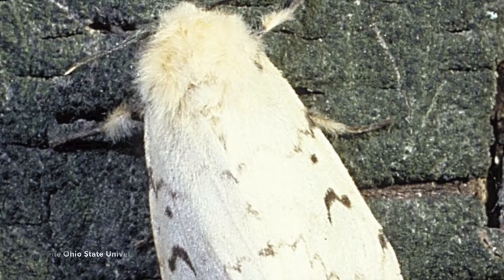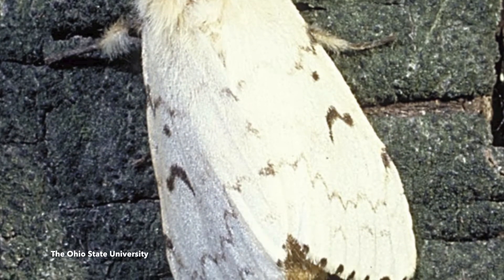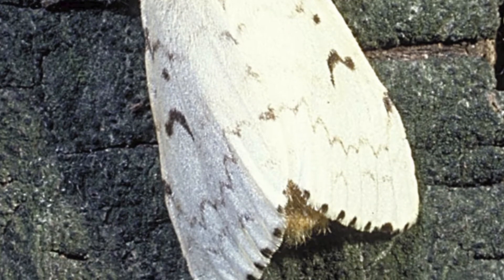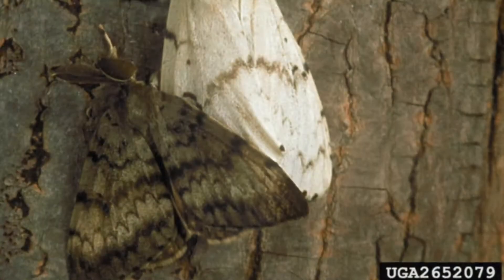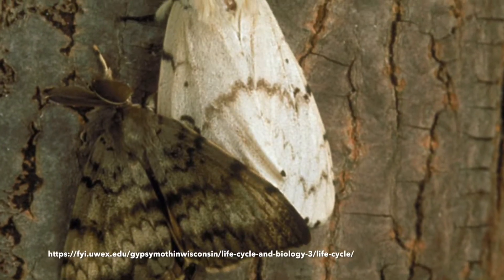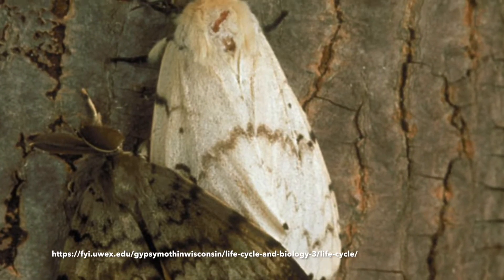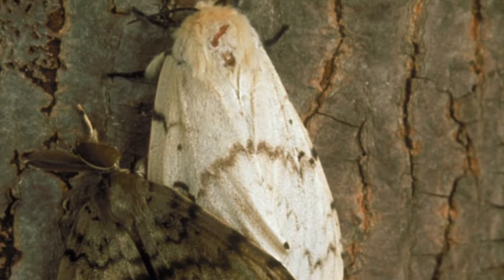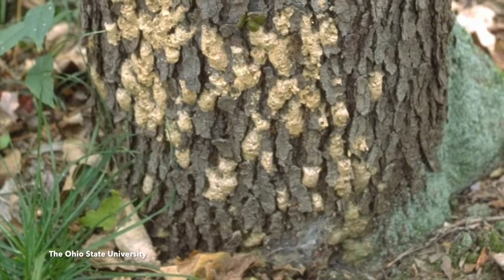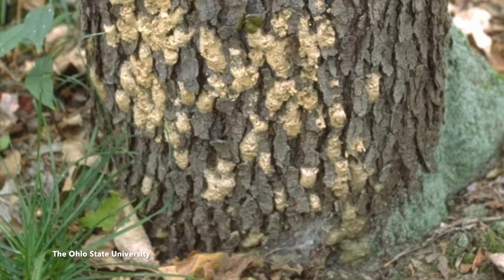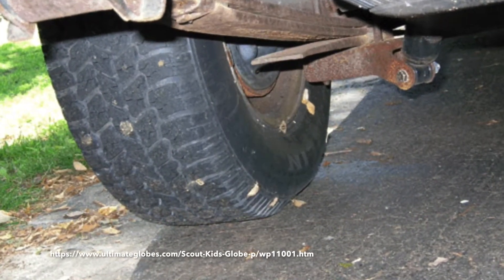The unflighted females are large white moths which climb up the trunks of trees and give off pheromones to attract males for mating. The males fly during the day, locate females, and after mating, eggs are laid on trunks, branches, and other nearby stationary objects.